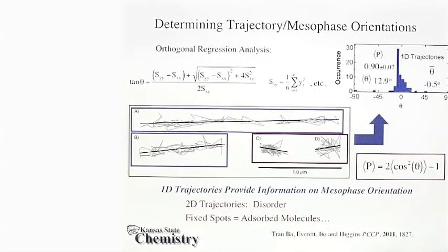Now these fits provide a number of very useful parameters. The most important of these is the trajectory orientation. And once we have data from a large number of molecules, we can take that data and construct histograms that depict the distribution of nanopore or nanostructure alignments.